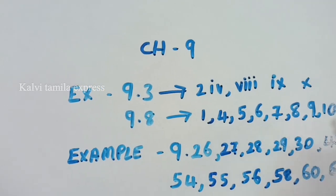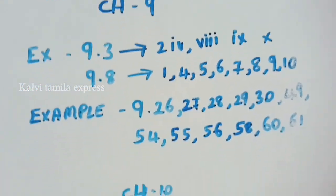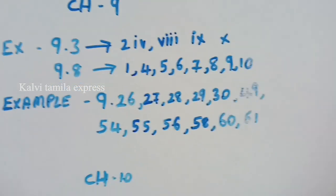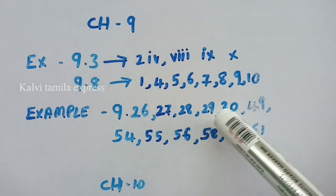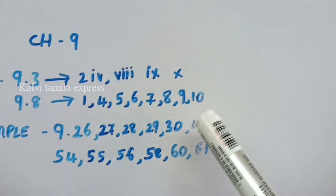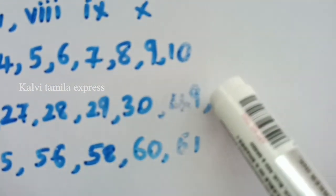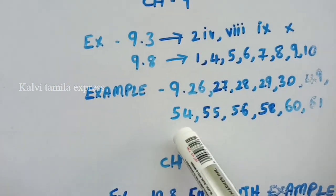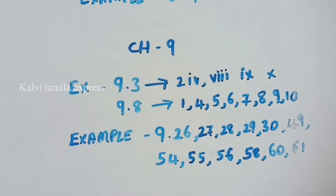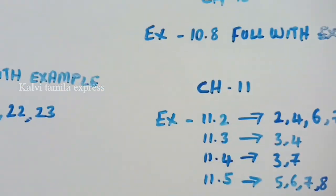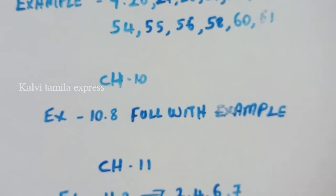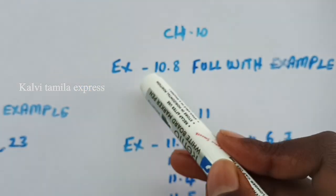For 1 marks: exercise 9.8 questions 1, 4, 5, 6, 7, 8, 9, 10. And the next one is example sums 9.26, 27, 28, 29, 30, and 49 — so 49 is it — and 54, 55, 56, 58, 60, 61 example sums. And the next one is chapter 10. So, 10.8 full on this example — 10.8.